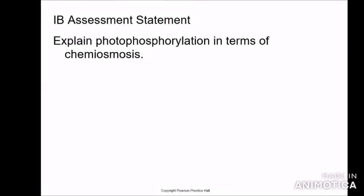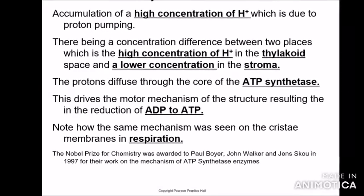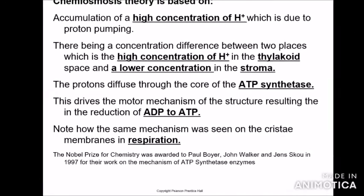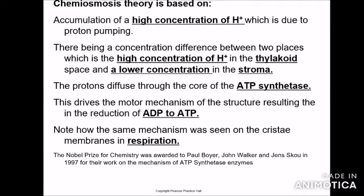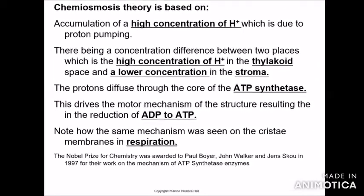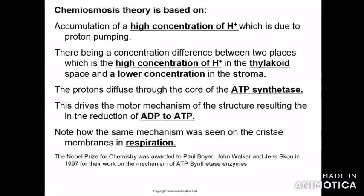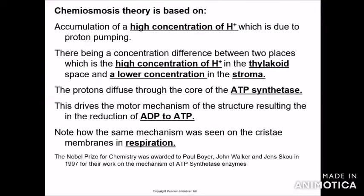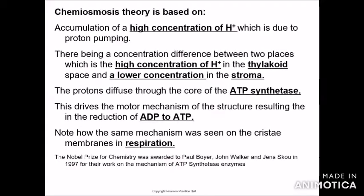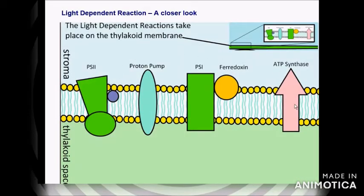Chemiosmosis theory is based on accumulation of a high concentration of hydrogen ions due to proton pumping. There is a concentration difference between two places: a high concentration of hydrogen ions in the thylakoid space and a lower concentration in the stroma. Protons diffuse through the core of ATP synthase, driving its motor mechanism and resulting in the phosphorylation of ADP to ATP.